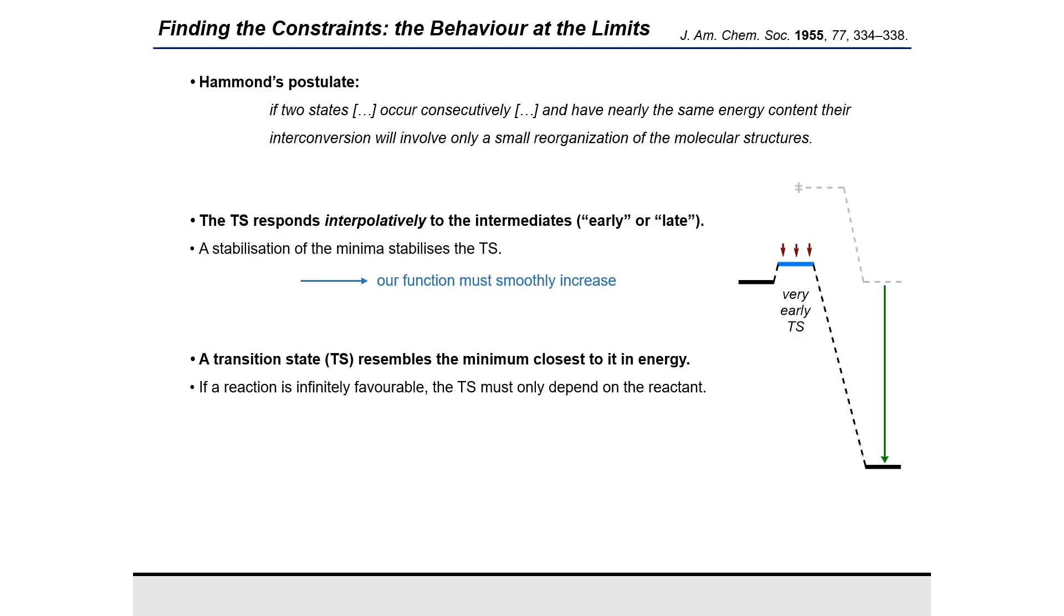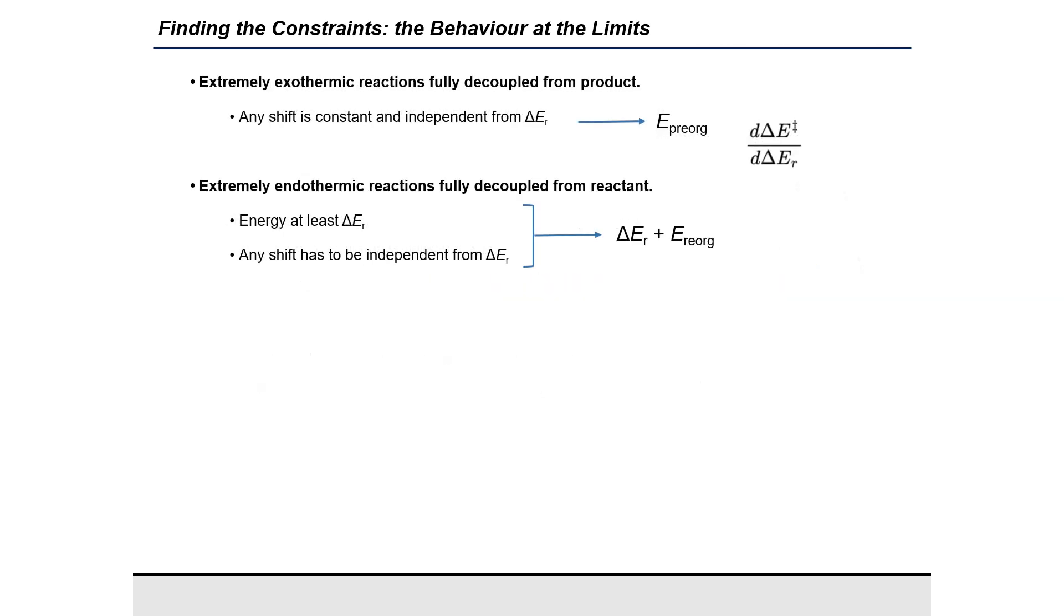As a transition state resembles the minima that is closest to it energetically, one can see what happens at the extreme, in which a reaction can be infinitely favorable, and so the transition state has to be infinitely close to the reactant.